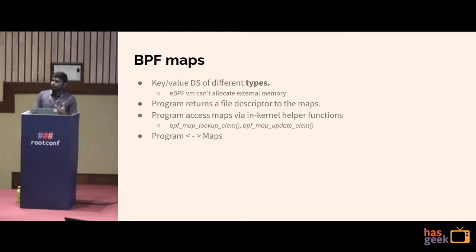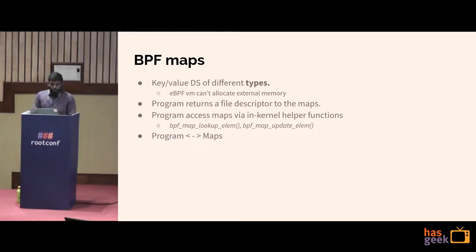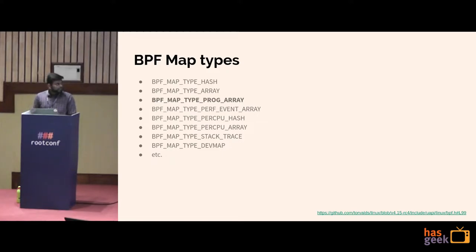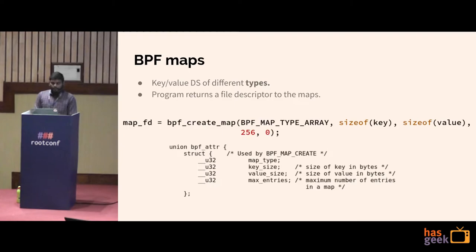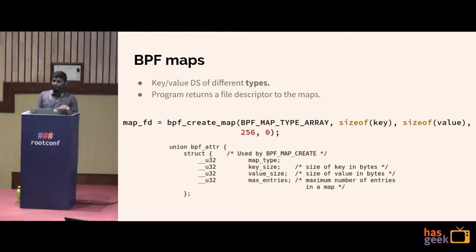The BPF syscall returns a file descriptor back to the user space program, which you can use to interact with the kernel space program you've just loaded. It also provides in-kernel helper functions implemented in the kernel. Each program can have access to multiple maps, and each map can be accessed by multiple programs. Map creation is handled via wrapper functions in the libBPF library, which internally compile down to the BPF syscall.